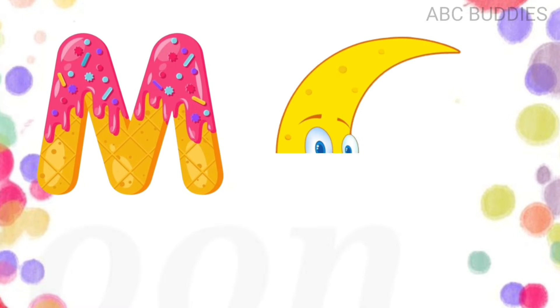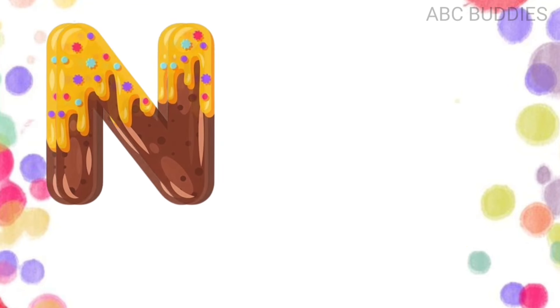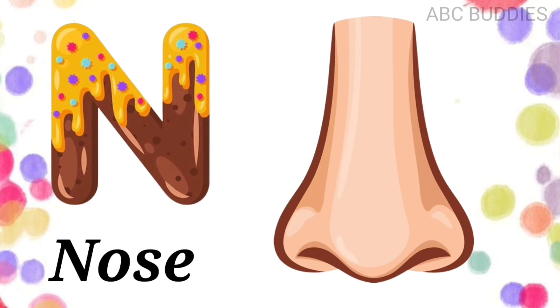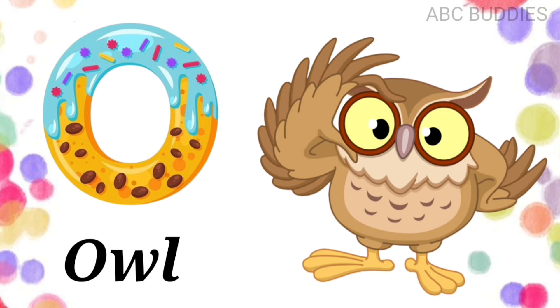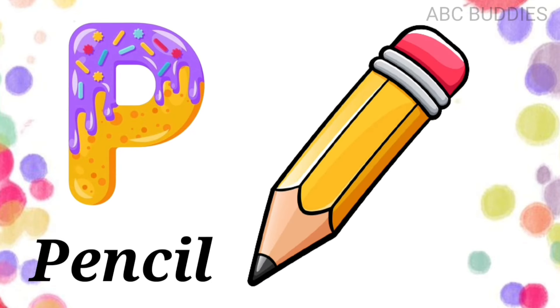M is for Moon. N is for Nose. O is for Owl. P is for Pencil.